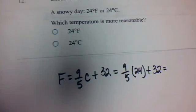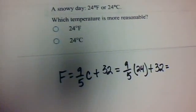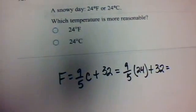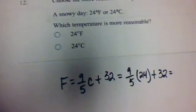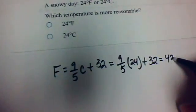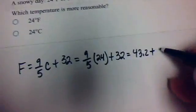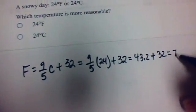Now, 9/5 will be like 9 divided by 5 times 24, which will be 43.2, and then 43.2 plus 32 will be 75.2.